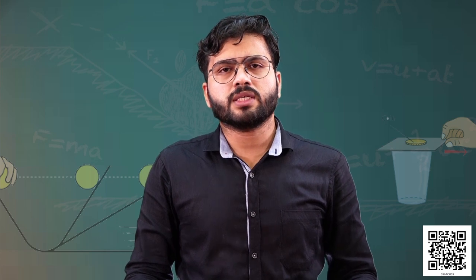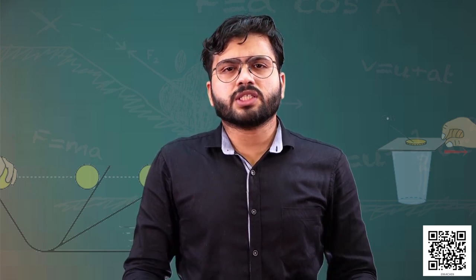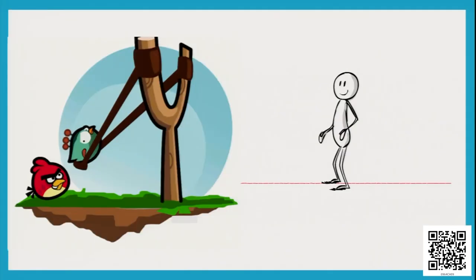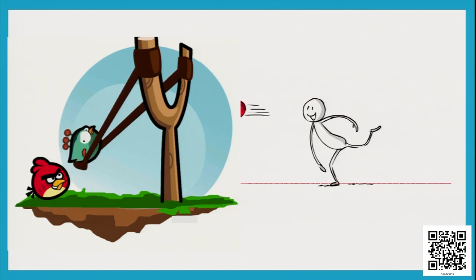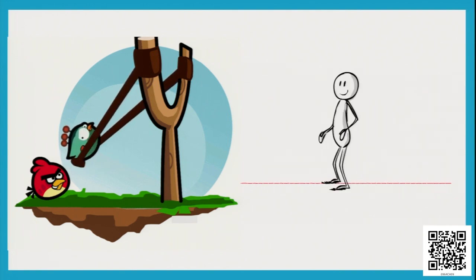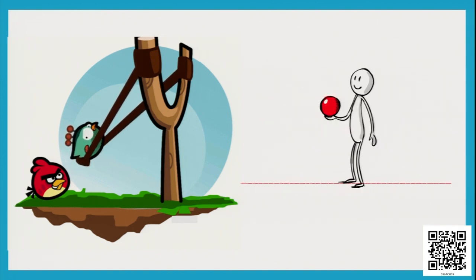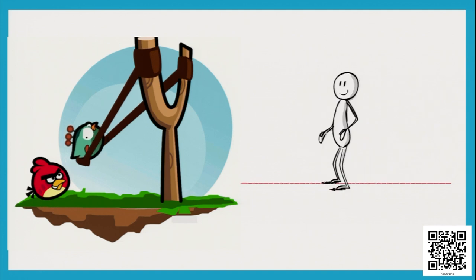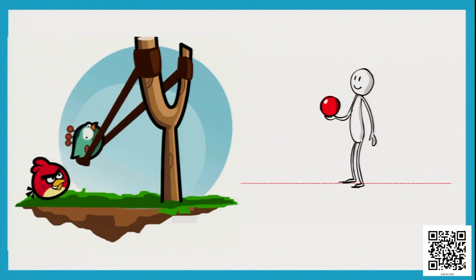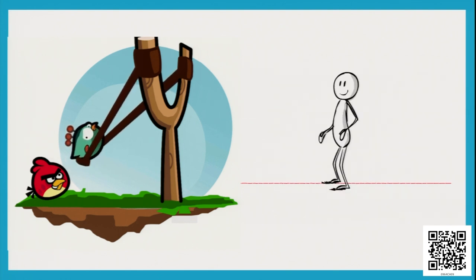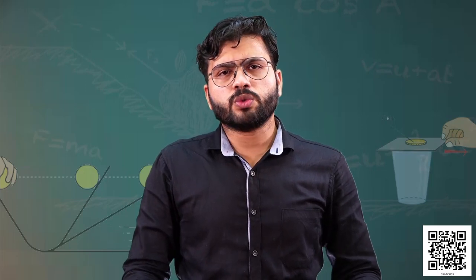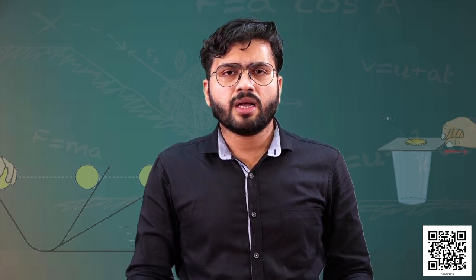Let's relate to our day-to-day life. The first example: the graphics suggest that a person is throwing a stone, and the other shows using a catapult to throw a stone. Compare these two situations — in which case will the impact be more? The answer is obvious: throwing a stone using a catapult will have much more impact than throwing by bare hand.